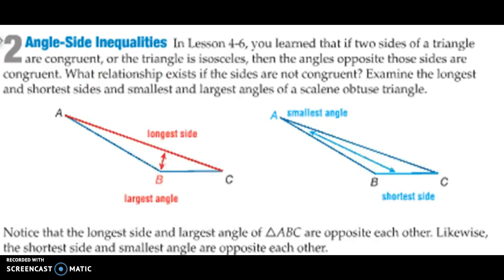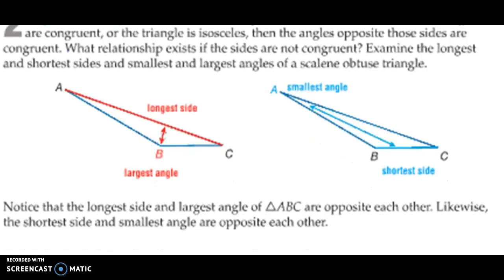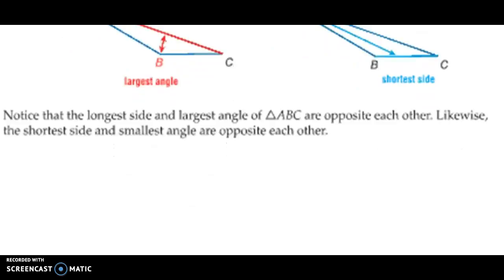Now we move to the angle-side inequality. We can look at sides based on our inequality theorem. Notice that the longest side and the largest angle of triangle ABC are opposite each other, and the shortest side and the smallest angle are also across from each other. That's going to help us with what we talk about next.